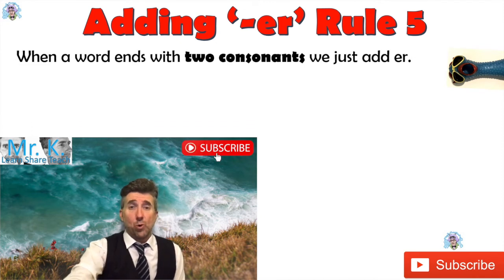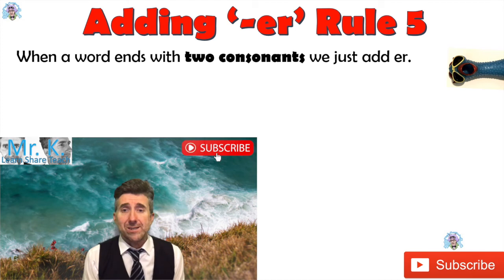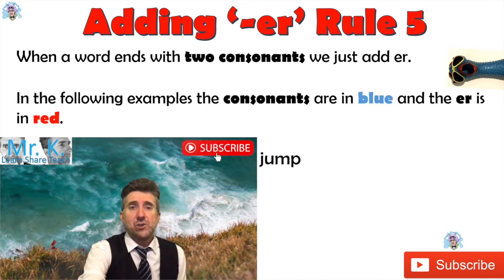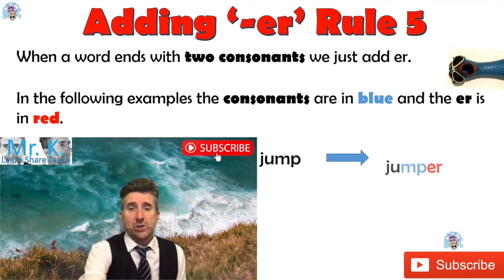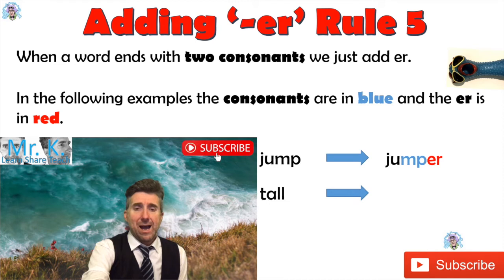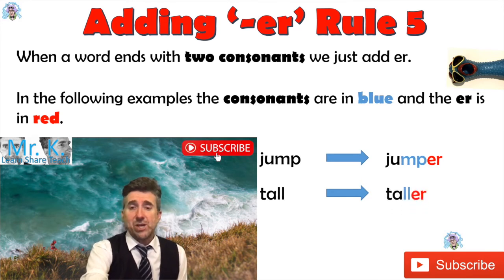On to rule number five: when a word ends with two consonants, we just add ER. Let's get some examples. 'Jump' — MP, the last two letters are both consonants, so we just add ER: 'jumper.' That jumper got one of the largest jumps in the Olympics. Next one: 'tall' — an adjective with two consonants at the end, two Ls, following the floss rule if you're aware of that — and we just add ER: 'taller.'